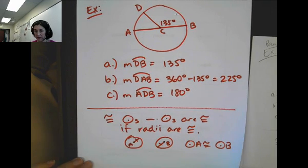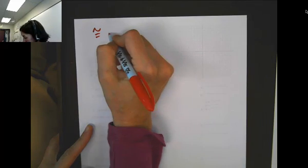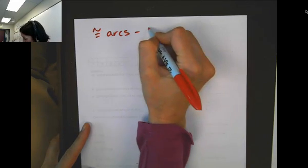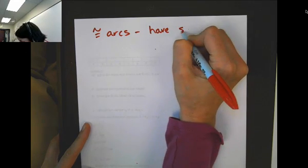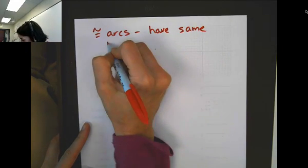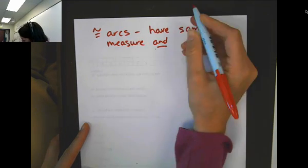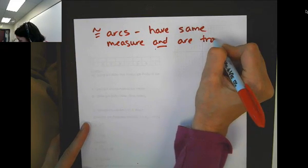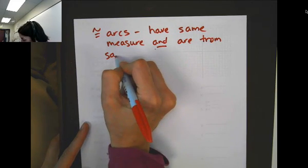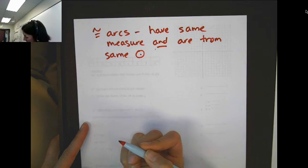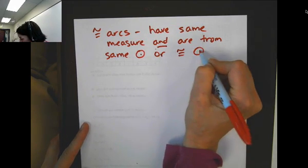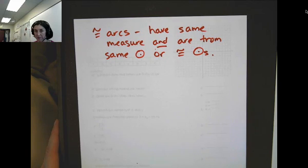Congruent arcs have to be on either the same circle or congruent circles. Let's jot that down first. Congruent arcs have the same measure, the same degree measure, and are from either the same circle or from congruent circles. So what do I mean by that?